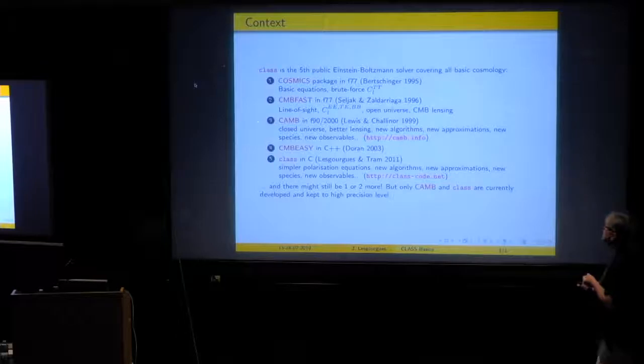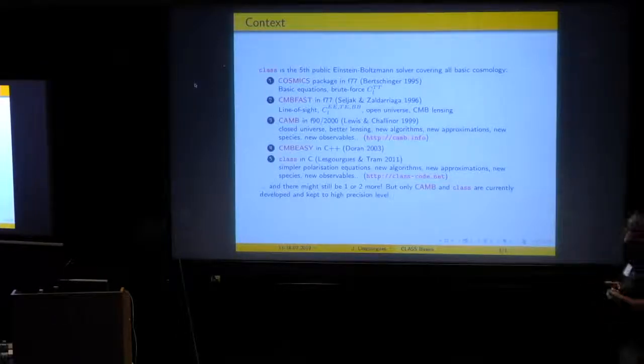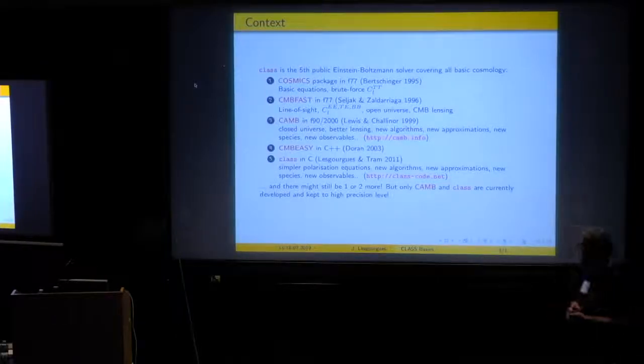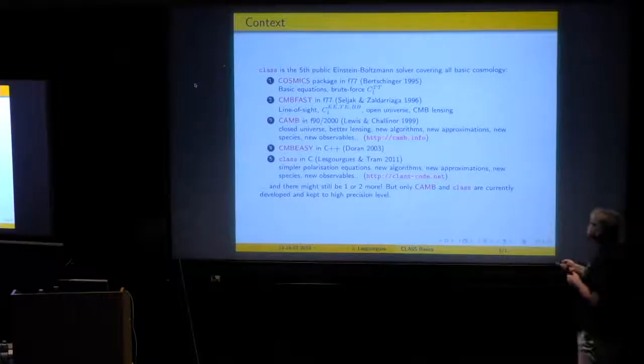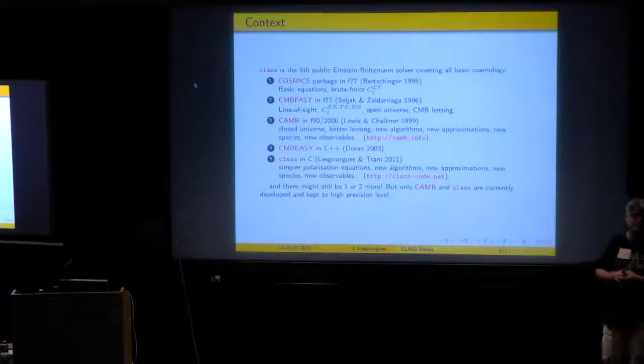And also, progressively, Anthony Lewis added a lot of new physics in CAMB. He had the first version of calculation with positive curvature. Together with Anthony Challinor, they defined a better version of CMB Lensing, which is a full-sky version. They did lots of clever algorithms, new physical approximations to speed up the code, so it became really more efficient. They did new species, new observables. As you know, CAMB has been developed a lot. It's a very big code. And it's still very actively maintained and very actively used.